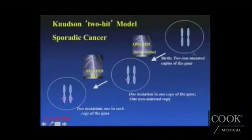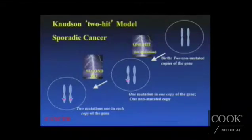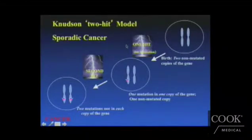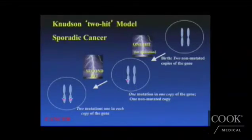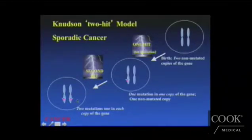At birth, they're born with two non-mutated copies of a gene, and they develop over their lifetime a hit to their genes — a mutation that happens in their genetic code. Now they have one mutated copy and one non-mutated copy of a gene. These patients require a second hit, a second mutation, because both cancer-protecting gene copies must be mutated. When they have mutations in each copy of the gene, cancer can develop.